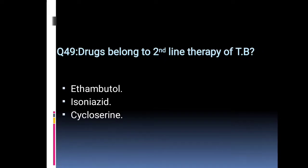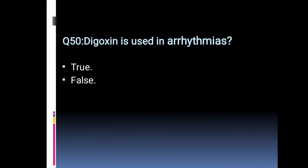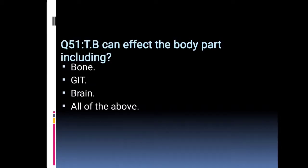Drugs belonging to second-line therapy of TB — you should know the first-line therapy so you can easily identify the second line. Digoxin use in arrhythmia: true or false? TB can affect which body parts: bone, GIT, brain, or all of the above?